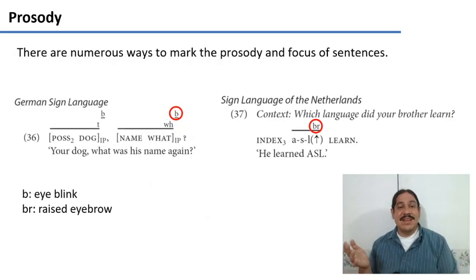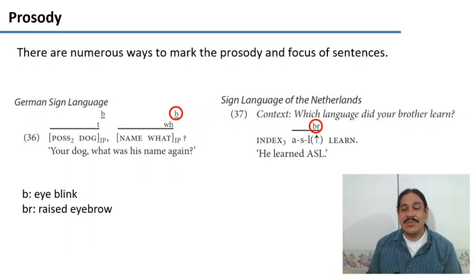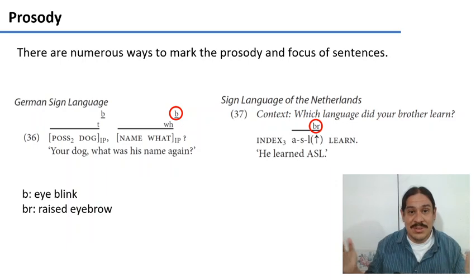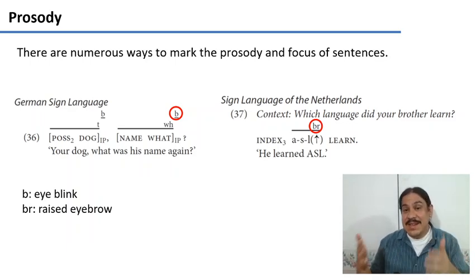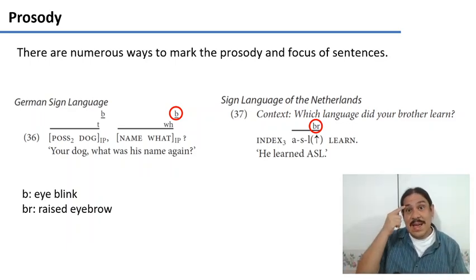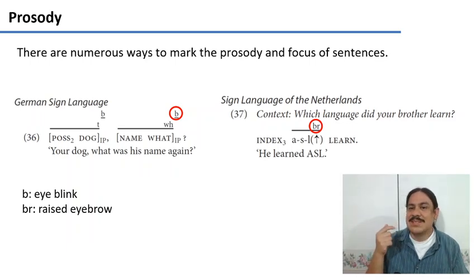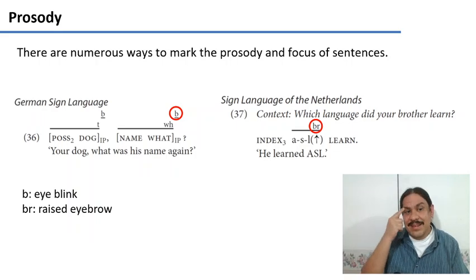Finally, sign languages have prosody. You can, for example, make the signs in a larger portion of the space to indicate emotion, and they have ways to mark the focus of a sentence. For example, in the sign language of the Netherlands, you can use a raised eyebrow to indicate focus. So you can say he learned ASL and then raise your eyebrow to indicate that that would be the focus word in the sentence.